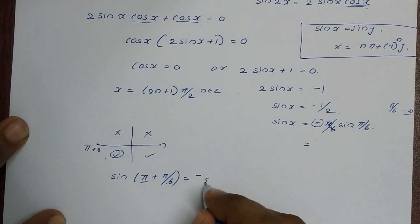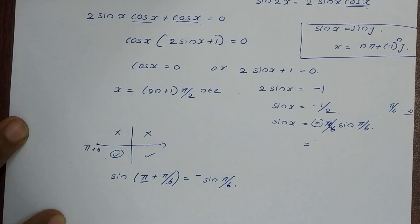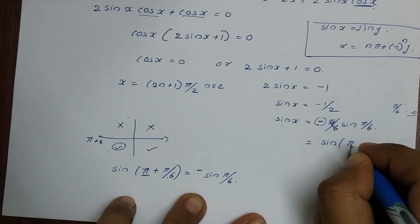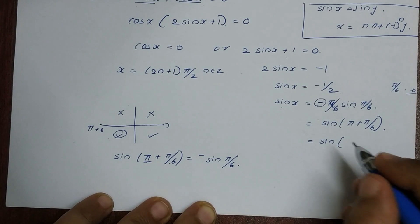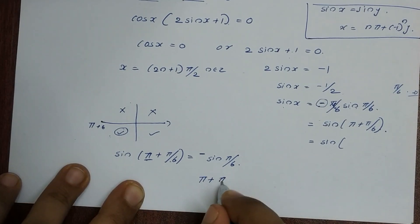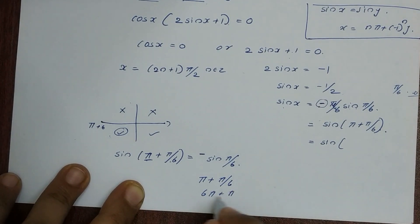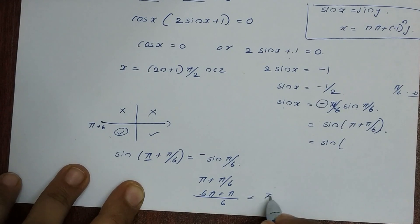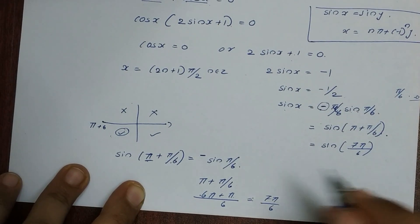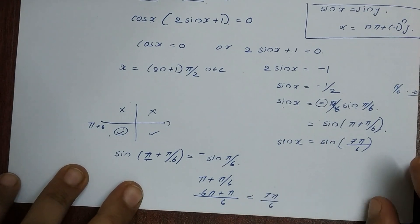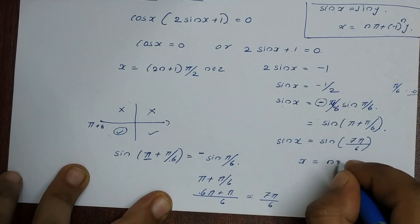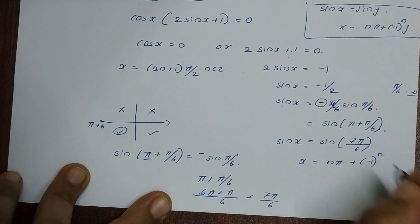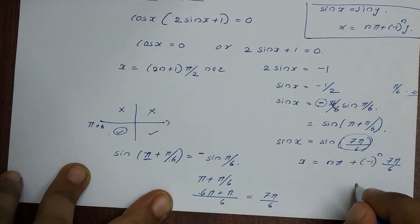We compute π plus π/6: that is (6π plus π) divided by 6, which equals 7π/6. So sinx equals sin(7π/6). Applying the general solution sinx equals siny: x equals nπ plus (−1)^n times 7π/6, where n belongs to Z.